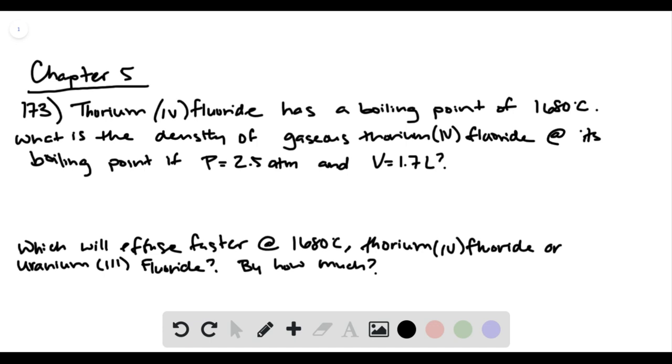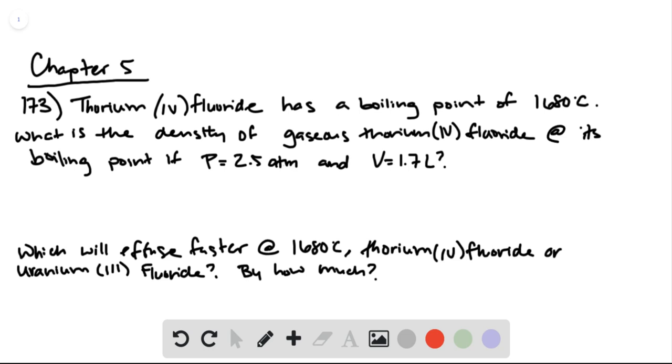To figure out the density of this thorium-4-fluoride, we can use the ideal gas law equation solved for number of moles. We can plug in the information from the problem. The pressure is 2.5 atmospheres and the volume is 1.7 liters.